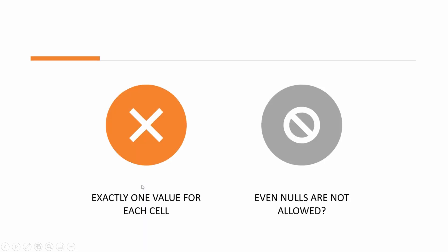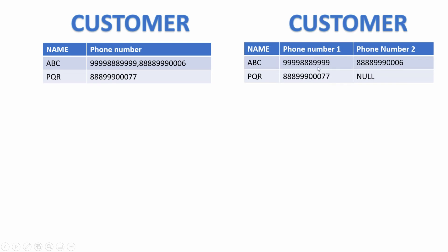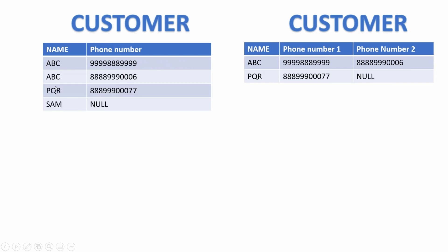Each row and column intersection contains exactly one value from the applicable domain — this means we must have a value for each cell. Does that mean even nulls are not allowed? So a table that has a nullable attribute is not in first normal form. Now this is somewhat of a gray area. The design where we have kept two columns for phone number and the second one has a null value because the customer only has one phone — that is not in first normal form because of the type of table structure we have created. While in another table, Mr. Sam is old school and does not have a phone, which is why the value is null.